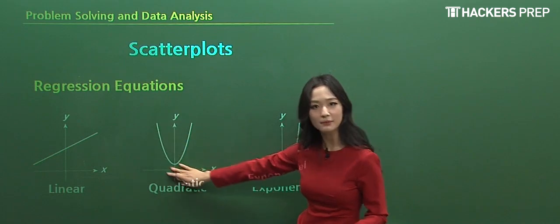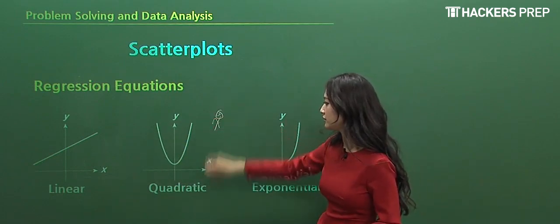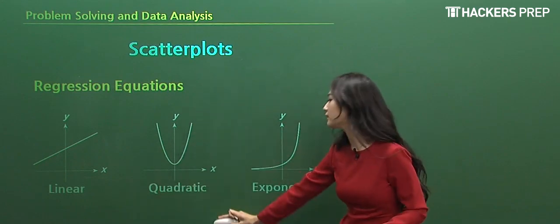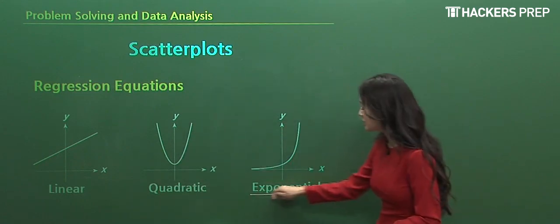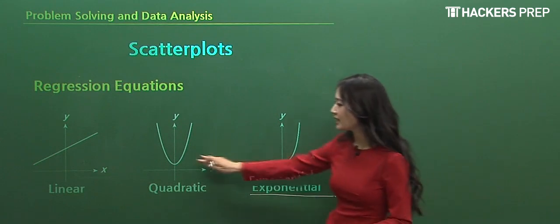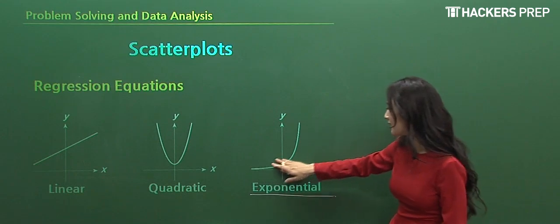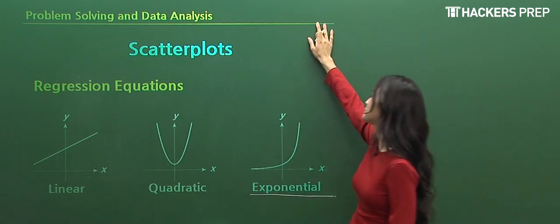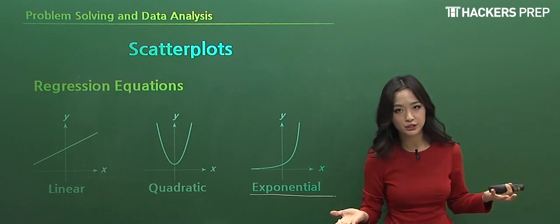And then the final one, exponential, where we don't have a particular parabolic function, but you can see that it either increases substantially or it can also decrease according to whatever situation we're applying it to.